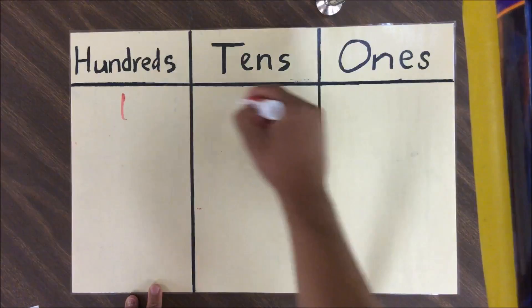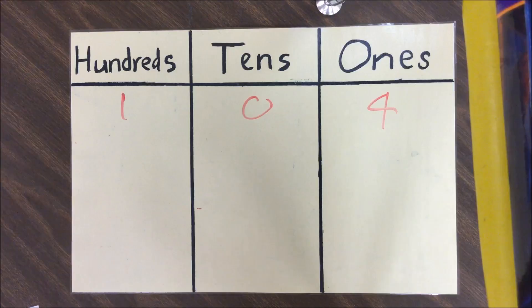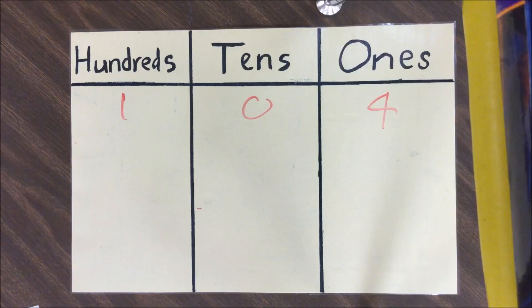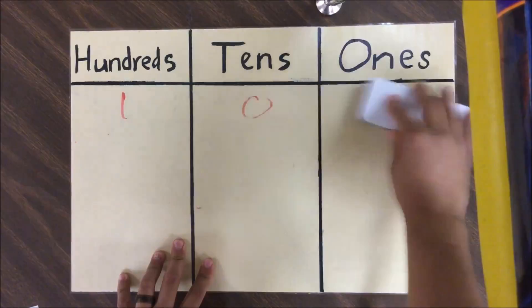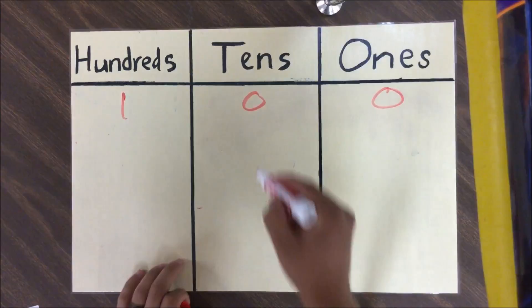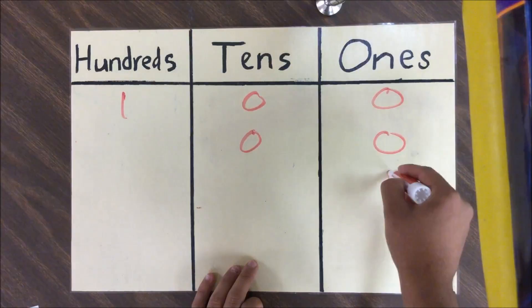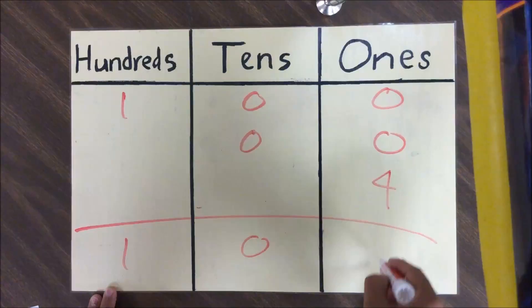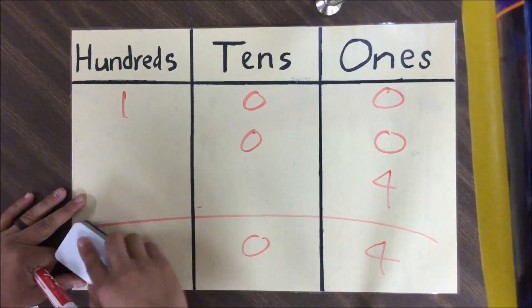We're going to write this out as 1-0-4 in the corresponding place value marks. When we decompose numbers we write it as: one hundred — that's 1 in the hundreds place — then zero in the tens place, followed by another zero, and finally four in the ones place. After we total all those up we see that we have one hundred and four.